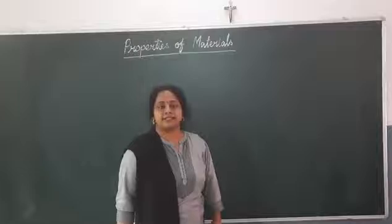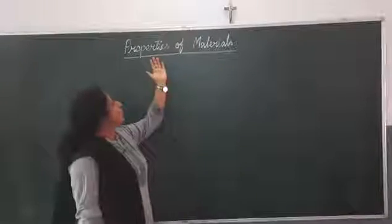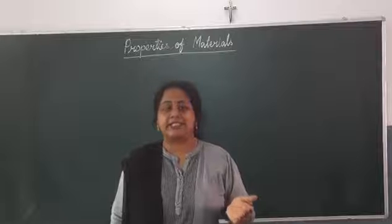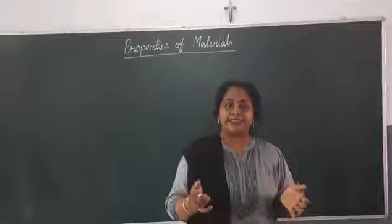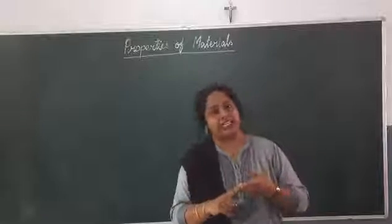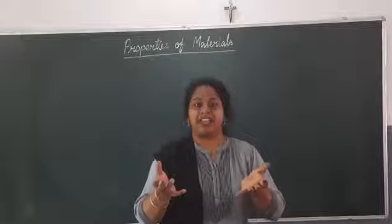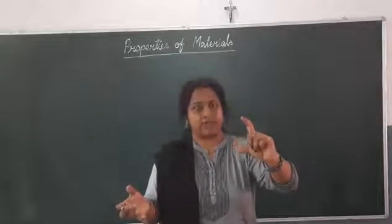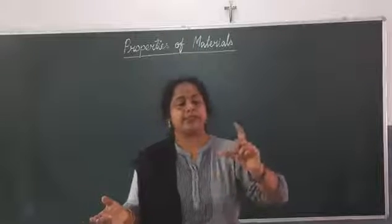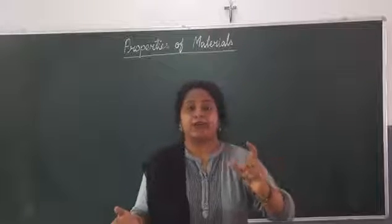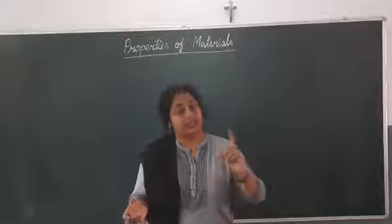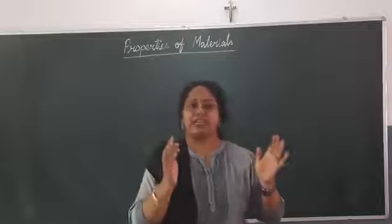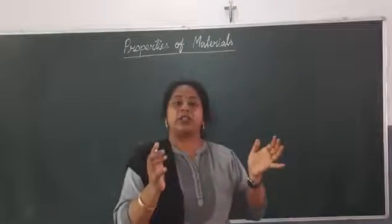Good morning students. Let us start today's class with properties of materials. When we talk about properties of materials, you must have seen that at your house the utensils are made up of either aluminium or steel — so that they may become heated up very fast. The tumblers in which you drink water or the glass are made up of glass or metal. Have you ever thought why the glass is not made up of paper? The glass is not made up of paper because paper will not be able to hold water. So every object or material is based on the property of that material.